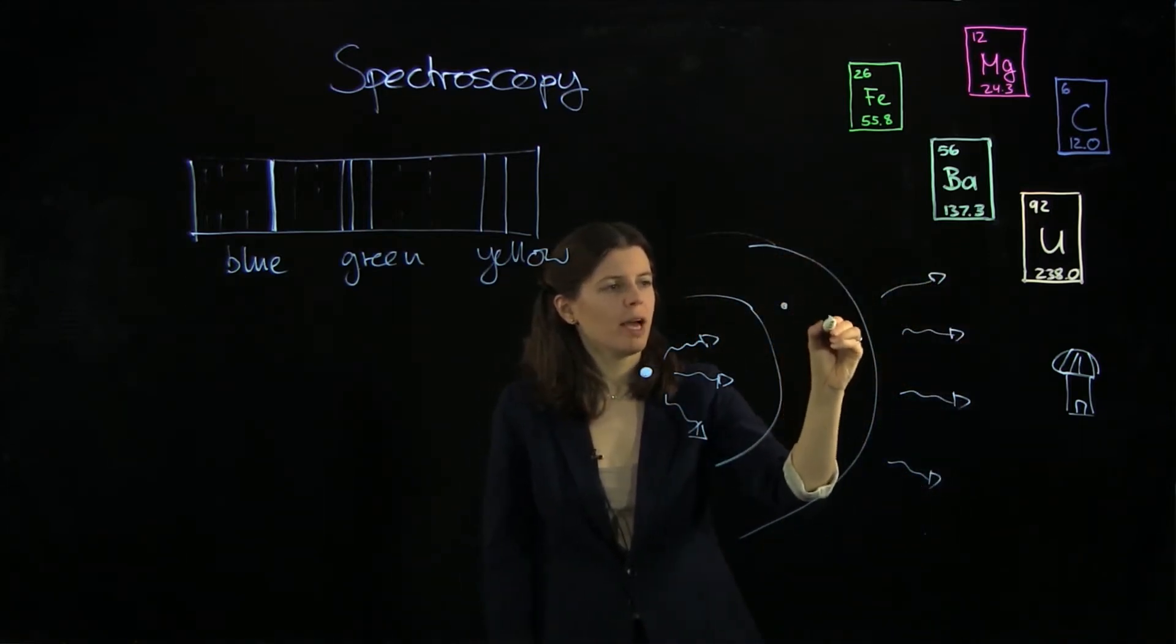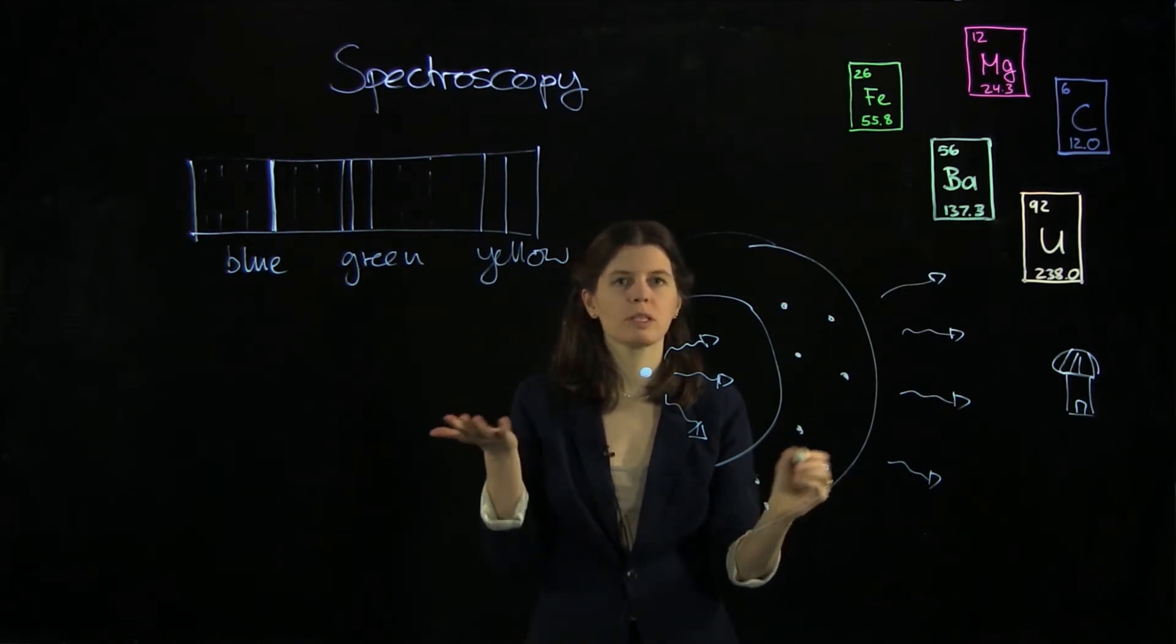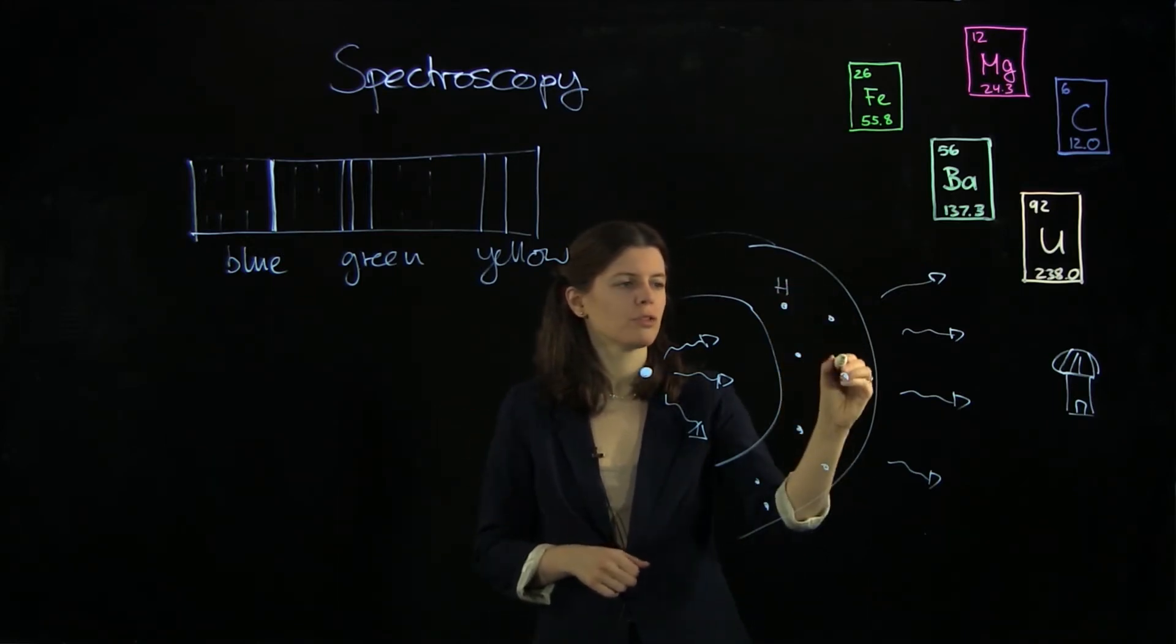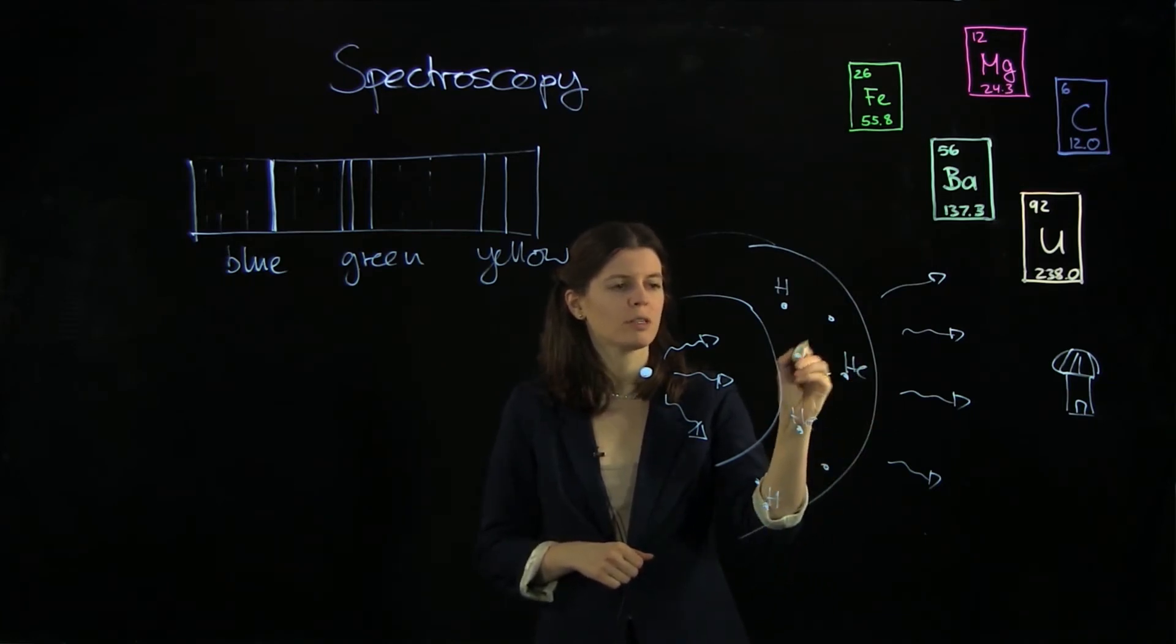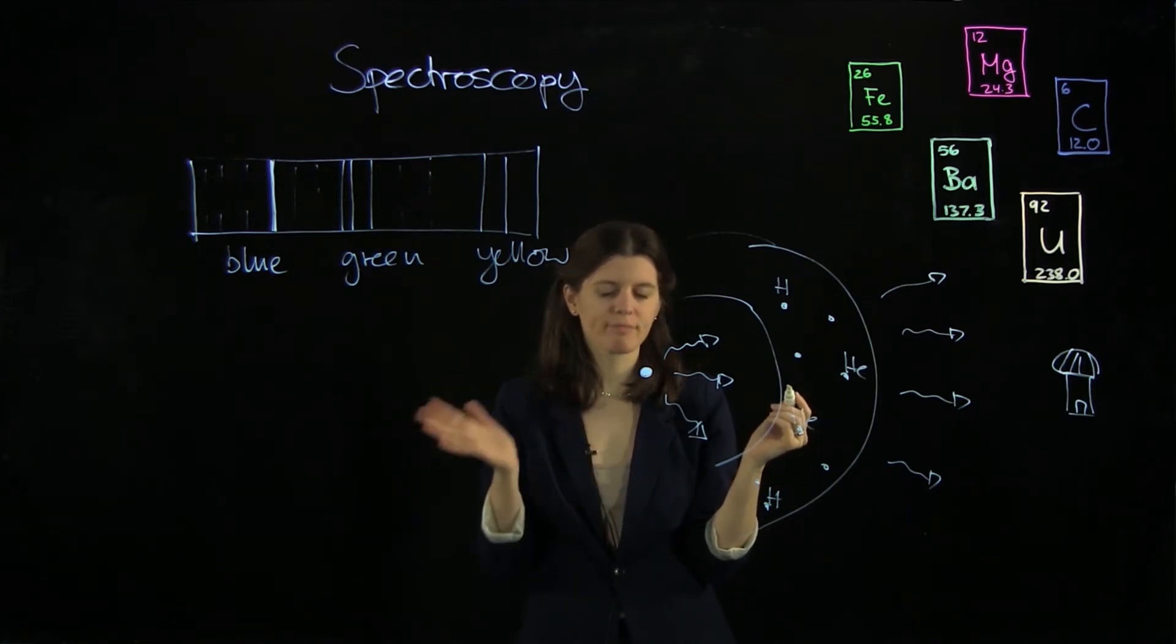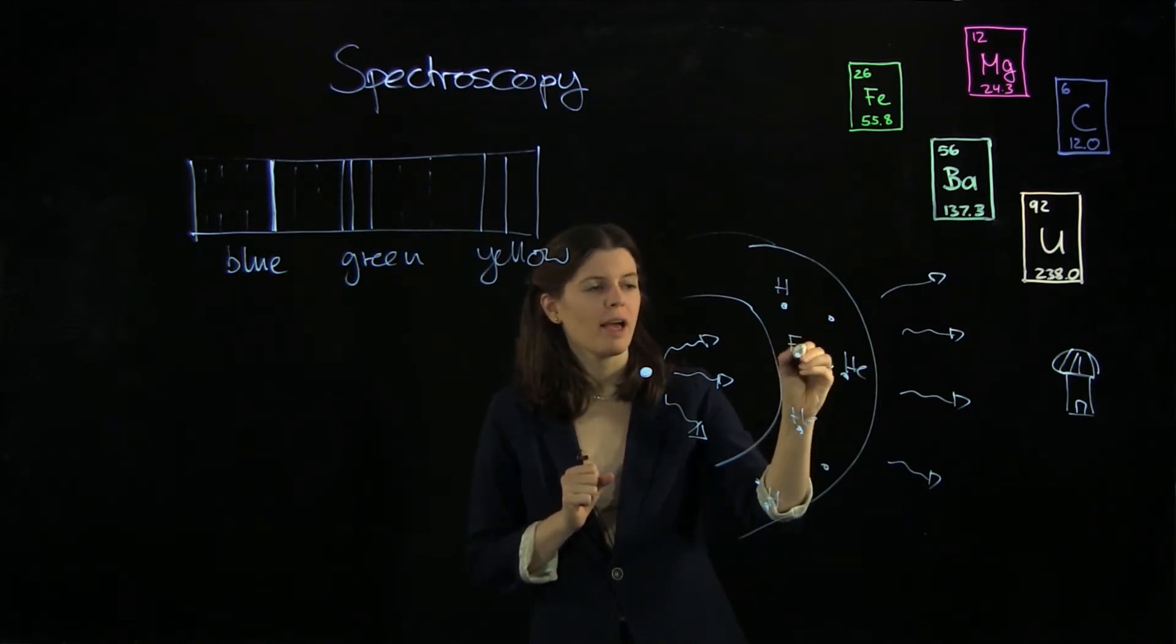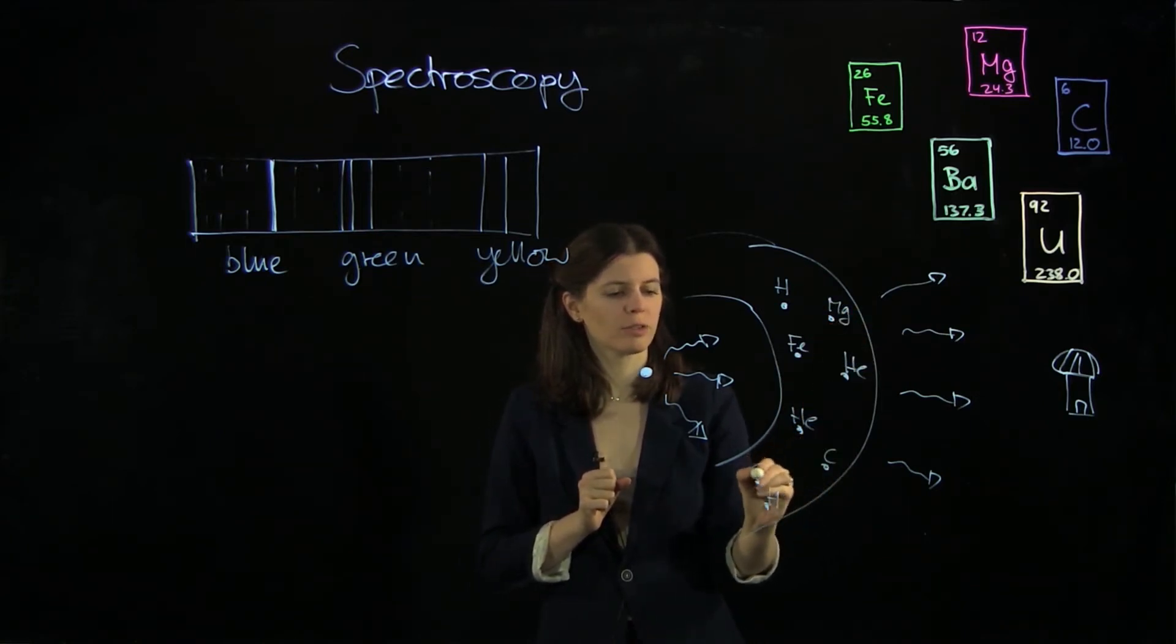So in this outer layer we have hydrogen and helium atoms because that's what the star is mostly made of. Hydrogen, helium, but of course unless we're talking about the very first stars, but that's a separate story, there will be other atoms in here. Iron, magnesium, carbon, oxygen.